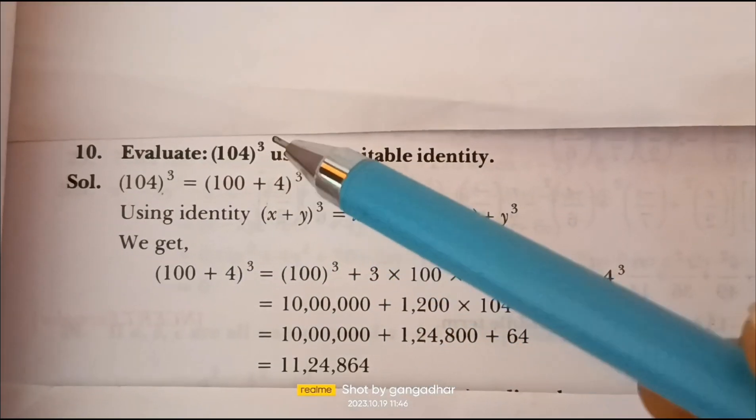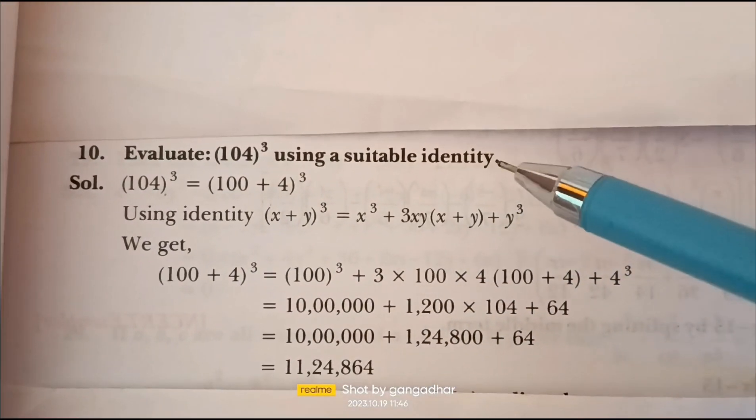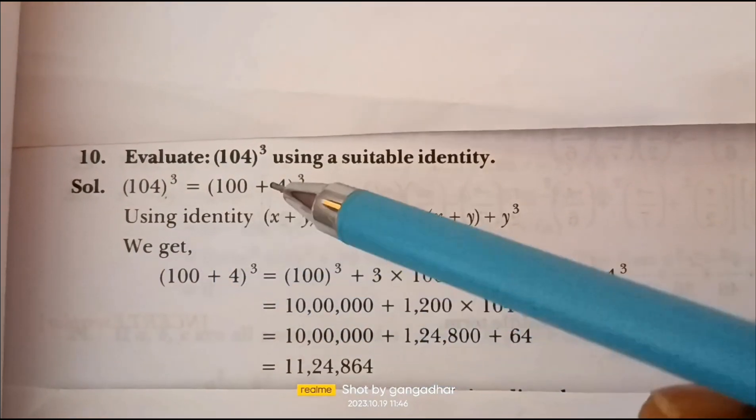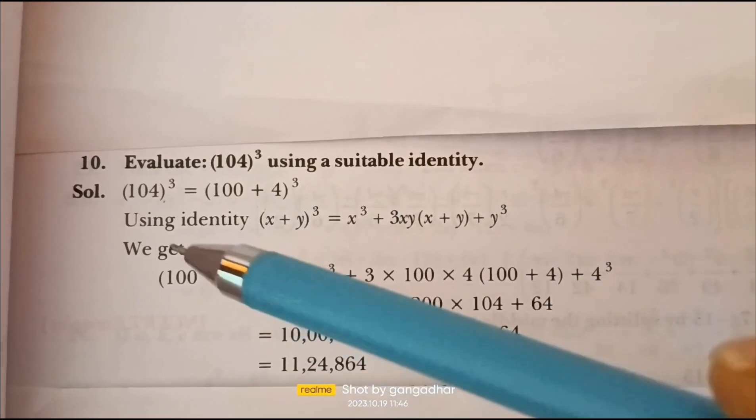Evaluate 104 to the power of cube using a suitable identity. 104³ can be written as (100 + 4)³.